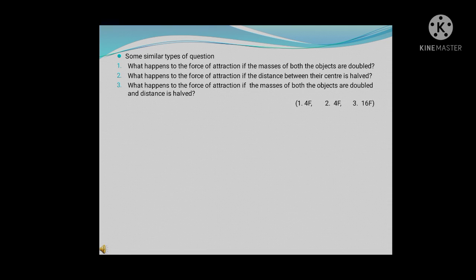Here are some similar types of questions. First: what happens to the force of attraction if the mass of both objects are doubled — meaning m1 becomes 2m1 and m2 becomes 2m2. Second: what happens if the distance between them is half, so d becomes d/2. Third: what happens if the mass of both objects are doubled and distance is half — m1 = 2m1, m2 = 2m2, d = d/2. Their answers are: first is increased by 4 times, second also 4 times, and third is increased by 16 times. Solve the questions and find whether the answers are correct.